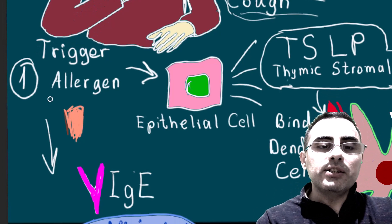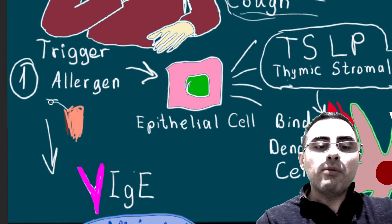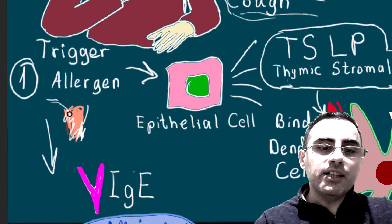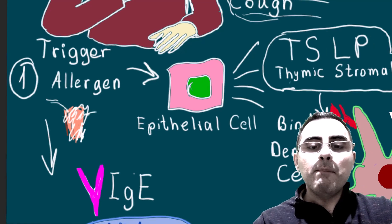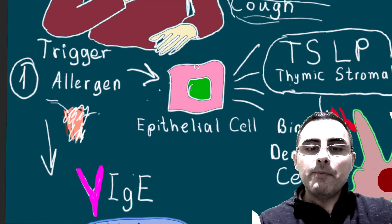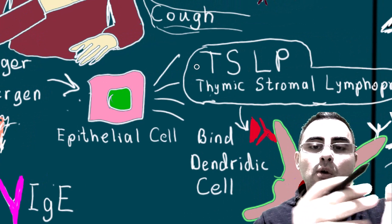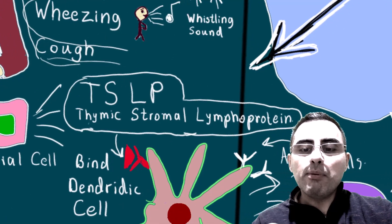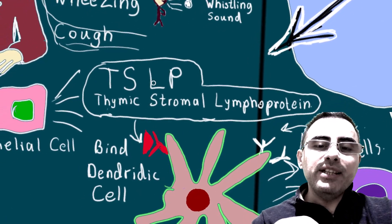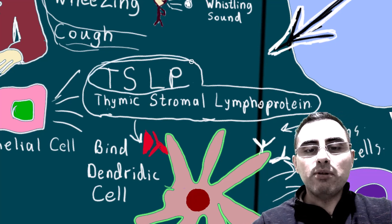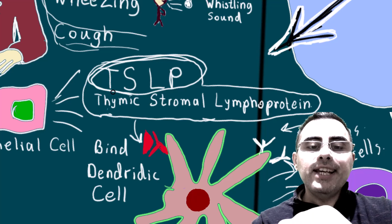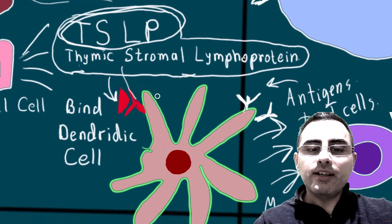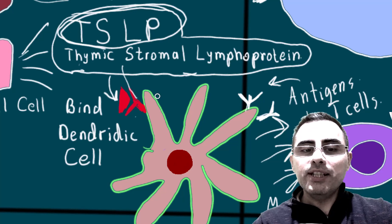First, there is a trigger — it can be pollen or a different protein — and a person inhales this trigger. The trigger binds to epithelial cells lining the wall of the bronchi. These epithelial cells then release thymic stromal lymphopoietin, called TSLP, which is the most important component here.